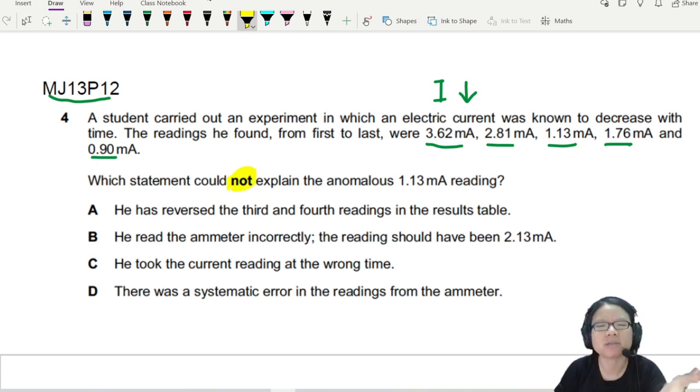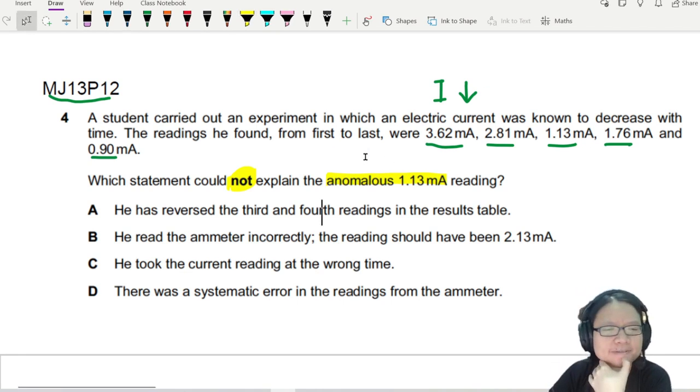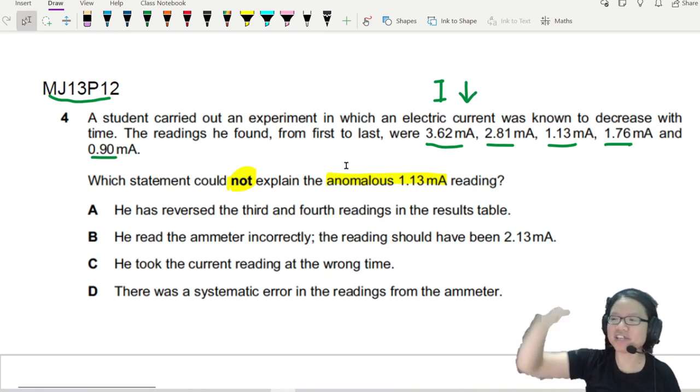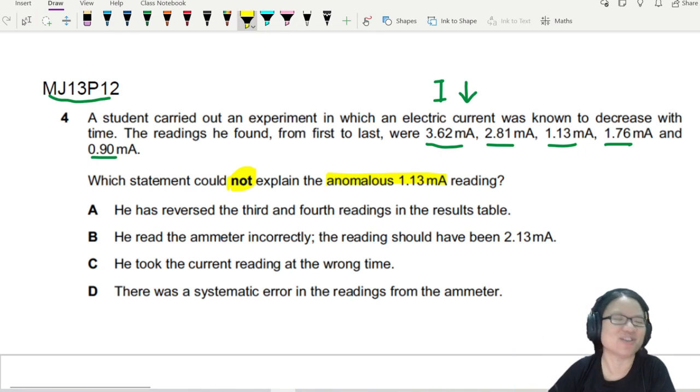Which statement could not explain the anomalous 1.13 milliampere reading? Why you do me dirty 1.13, you are supposed to fit the trend. Let's see, option A: the person reversed the third and fourth reading. Could be right, maybe when you fill in the table you fill in the wrong cell.